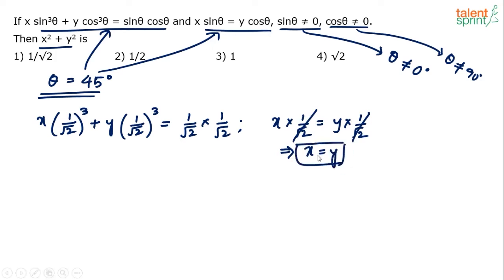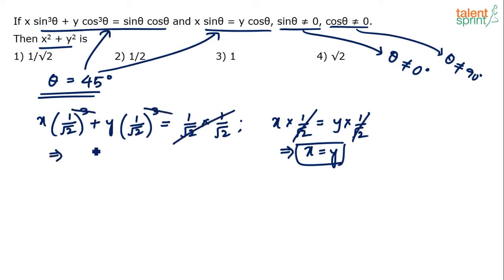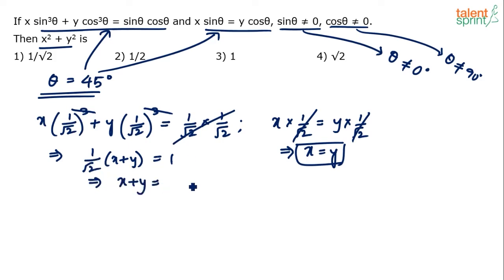So one conclusion is x = y. Now simplify equation 1: take (1/√2)² common from the left side — it cancels with (1/√2)² on the right side. We are left with (1/√2)·(x + y) = 1, which implies x + y = √2.